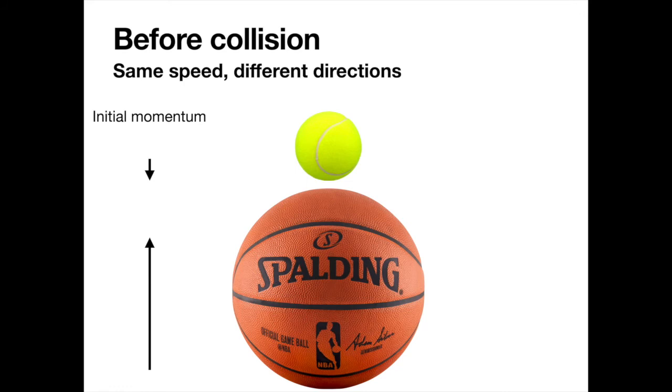So why did that demo with the basketball and tennis ball work the way that it did? Neither of them looked all that bouncy, but when the tennis ball was dropped on top of the basketball, we saw that the tennis ball goes flying much higher than you might expect. So if we look at this before the collision, so before the two balls collide, the basketball reaches the ground first and has bounced up and is already moving back up. So if we just treat this as being perfectly elastic, just to get an idea.